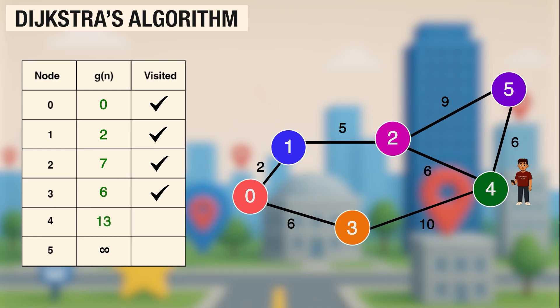Next we visit node 4, which has a cost of 13, and check its neighbors. Nothing improves, so the table stays the same. Next, we visit node 5, which has a cost 16. The shortest route to node 5 is now 0, 1, 2, and 5, and the total cost is 16. Dijkstra just keeps picking the closest unvisited node, uses it to try to lower the cost of its neighbors, marks it visited, and repeats, that's how we find the shortest paths.